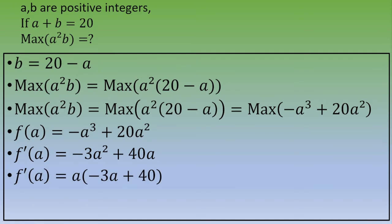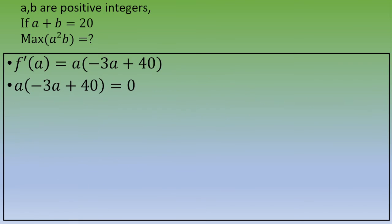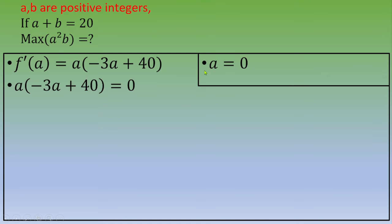Factoring by A, we obtain A times (negative 3A plus 40). To find the critical points, we set the first-order derivative equal to 0 — this is Fermat's theorem. This gives two cases. The first case is A equals 0, but since A and B are positive integers, this case is no longer valid.